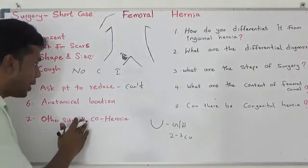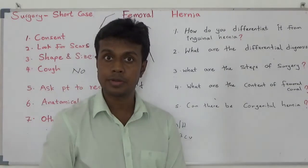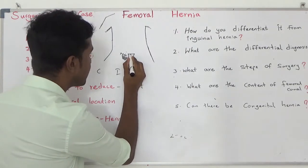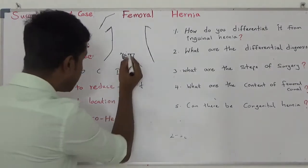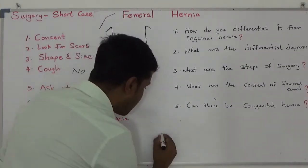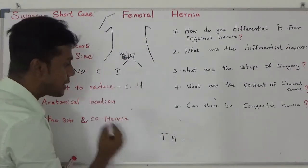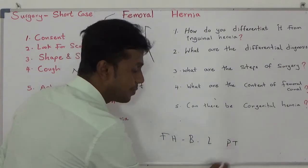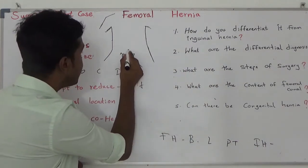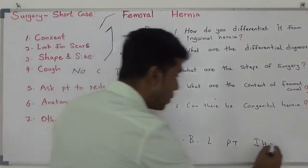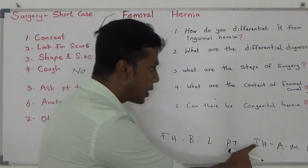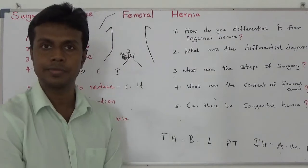Try to find the exact anatomical location. First of all, try to identify the pubis and pubic symphysis. The midpoint of the pubic symphysis is here, and 1 cm lateral to the midpoint is the pubic tubercle. Your femoral hernia lies below and lateral to the pubic tubercle. Your inguinal hernia lies above and medial to the pubic tubercle.